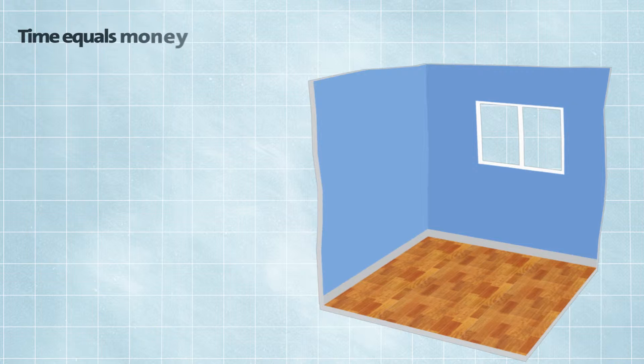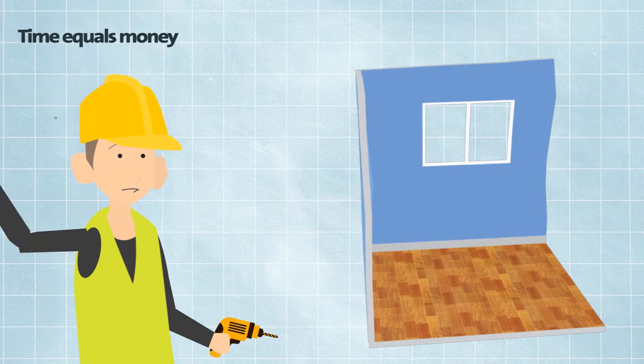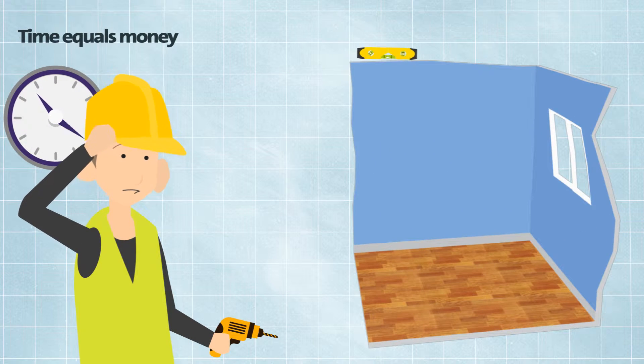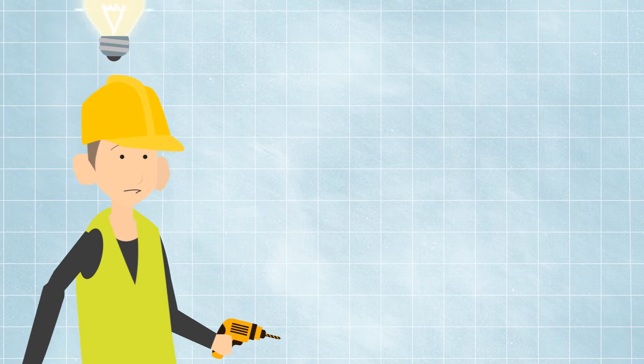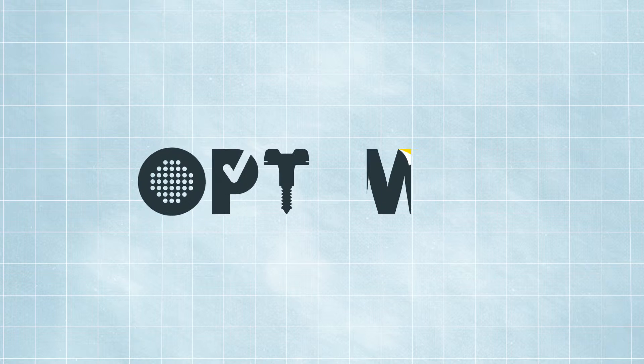Most walls aren't straight which makes it difficult and time consuming for installers to create a flat level installation when using traditional insulation systems. The solution is Optima.